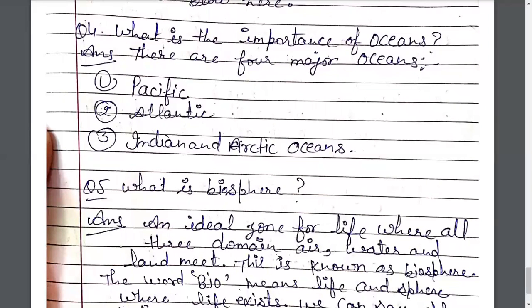What is the importance of oceans? Mahasagar ke mehatva ko samjhaiye. There are four major oceans: Pacific, Atlantic, Indian, and Arctic Ocean. Char pramukh Mahasagar hain: Prishant Mahasagar, Atlantic Mahasagar, Hind Mahasagar, aur Arctic Mahasagar.